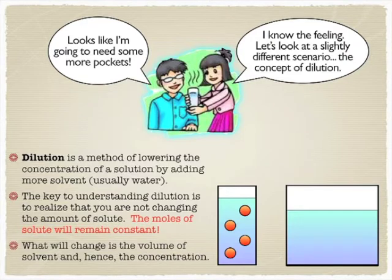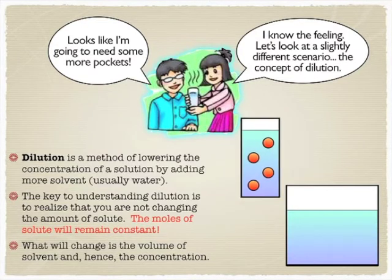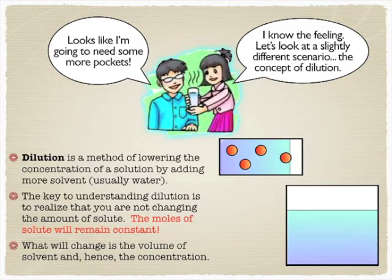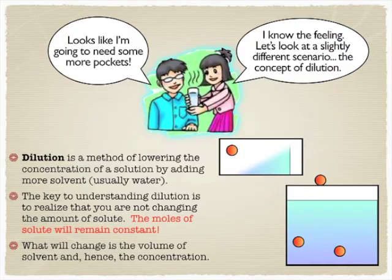And so if we look at the example here of each of those little balls representing maybe a molecule or a mole, as this stuff flows into the bigger container, you're going to have the same amount of solute in there. It's just going to be distributed among a bigger volume.